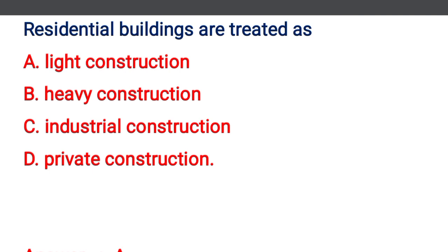Next question: residential buildings are treated as — option A: light construction, option B: heavy construction, option C: industrial construction, option D: private construction. The correct answer is option A: light construction, because residential buildings are very easy to construct.